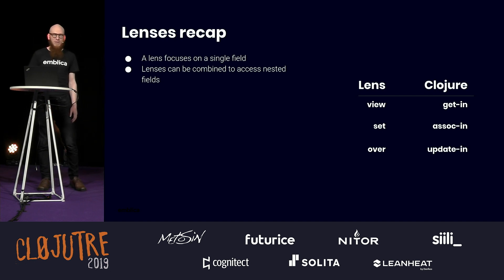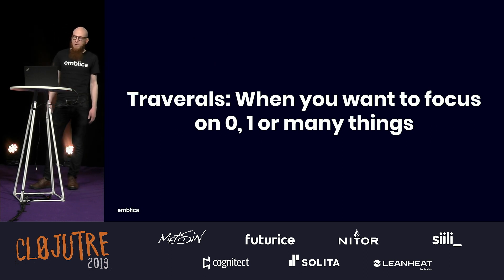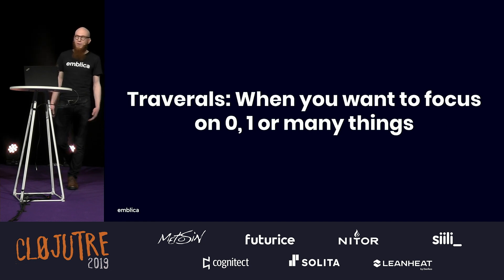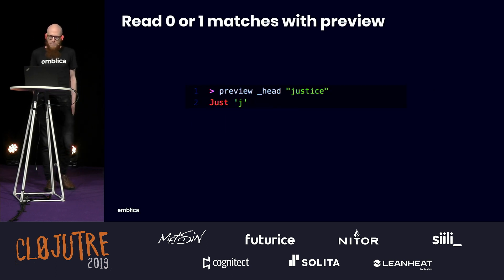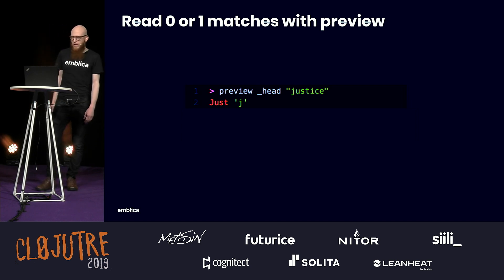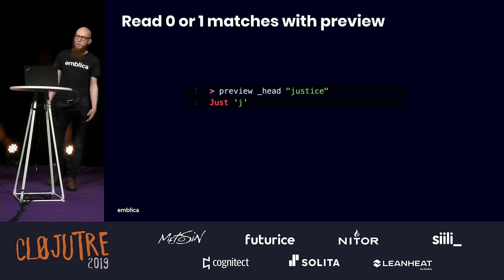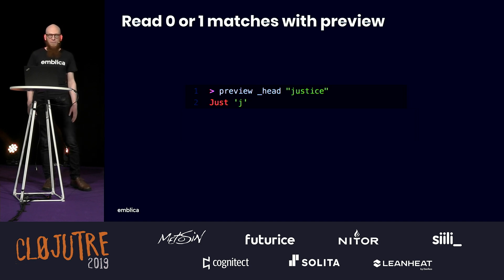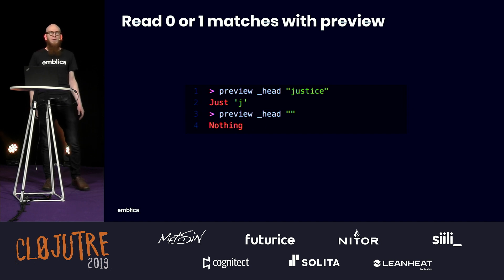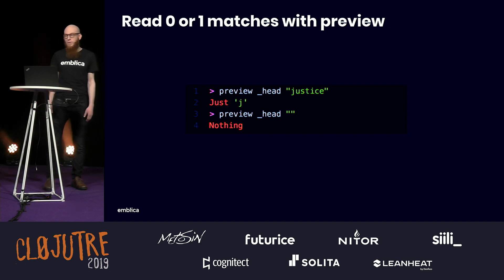Sometimes you don't know if you can focus on something. For example, you have a collection and you don't know if there is something in it or not, but you'd still like to focus on it. Or you might have multiple matches. Here we have a traversal called underscore_head that allows you to focus on the first element of a list. So here we have a string, and we can focus on the first letter of that string. There's a new function, preview, that lets you check out the results of something where you want to check if there was a result or not. If you feed it the empty string, the empty string does not have a first letter, so we get Nothing.